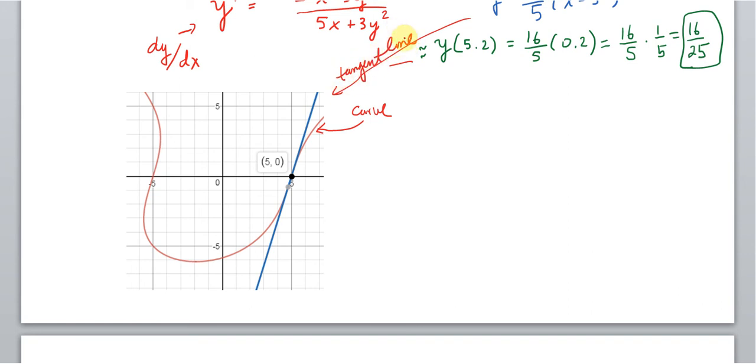Okay. So that's the tangent line. And you can see that the tangent line through the point (5,0) is very close to the curve. So instead of trying to figure out, I mean, we could figure out what y(5.2) is.